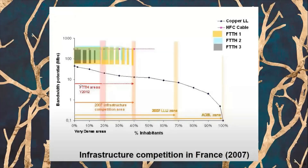This graph shows what happened in France in 2007. The two axes represent the bandwidth potential of the network and the total inhabitants or population. As you can see, the copper or home telephone graphic line reached 100%, meaning that home telephone service can be accessed in all places in the country. Compared to FTTH, only about 40% of the population in France can access fiber network service.